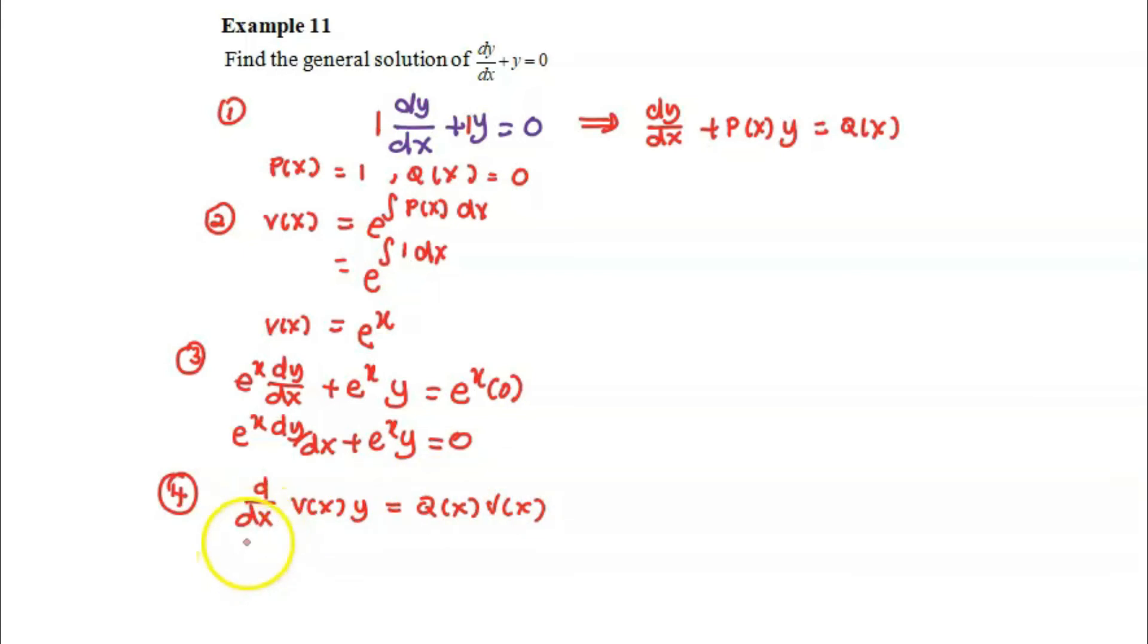Here, we will have d over dx. Our v(x) is exponent x times y, the dependent variable equals to q of x which is 0 times v of x which is exponent x.